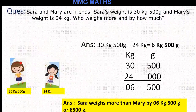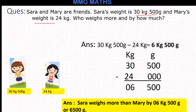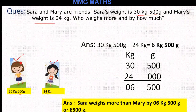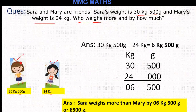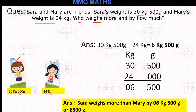Moving to the next page. Look here children — the question is: Sarah and Mary are friends. Sarah's weight is 30 kg 500 gram and Mary's weight is 24 kg. Who weighs more and by how much? You can see Sarah's weight is 30 kg 500 gram and Mary's weight is 24 kg. Since 30 kg 500 gram is more than 24 kg, Sarah's weight is more.